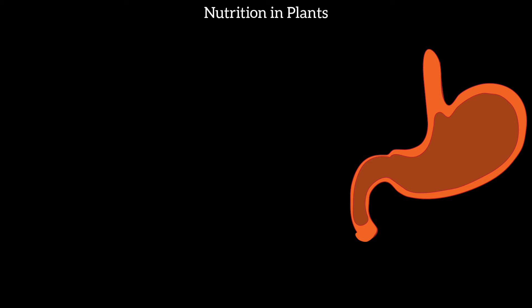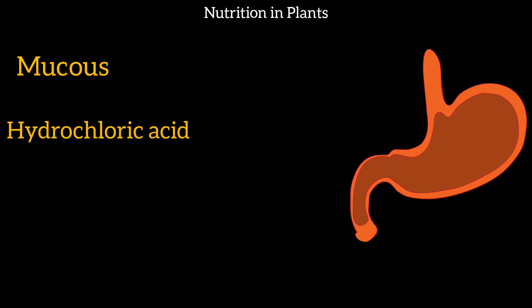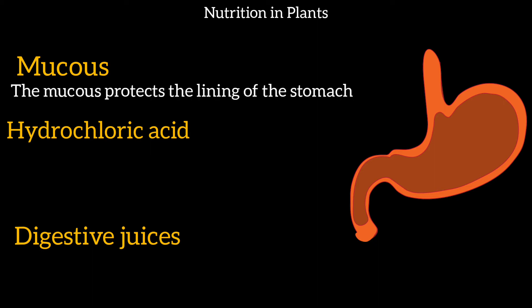The inner lining of the stomach secretes three things: mucus, hydrochloric acid, and digestive juices. Remember, our stomach secretes these three things.